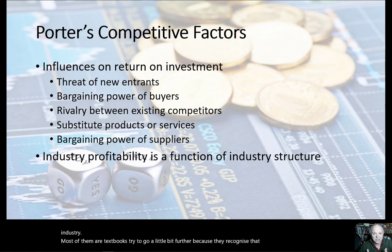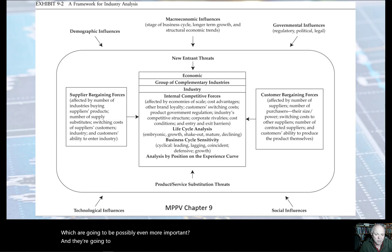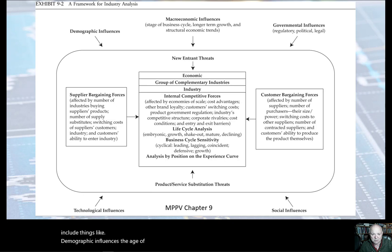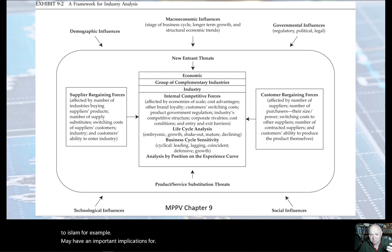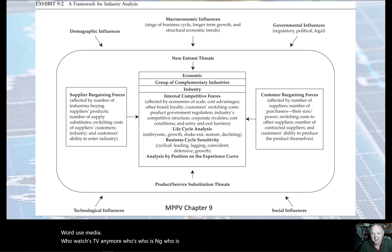Most textbooks go a bit further, recognizing that the industry is not just affected by endogenous or inside factors, but also by exogenous factors from outside the industry that may be even more important and influence how competition happens within those industries. Those exogenous factors include demographic influences — the age of the population, socio-cultural factors. A rise in observant Islam, for example, may have important implications for businesses like banking or selling alcohol. A younger population may affect the way people use cars or consume media — who watches broadcast TV anymore? It certainly is not millennials.